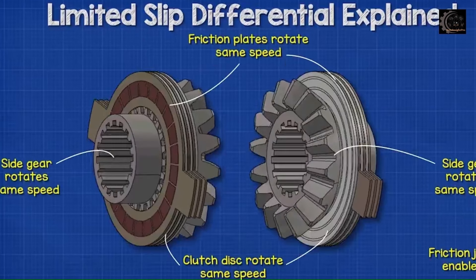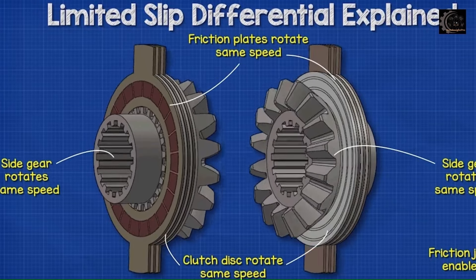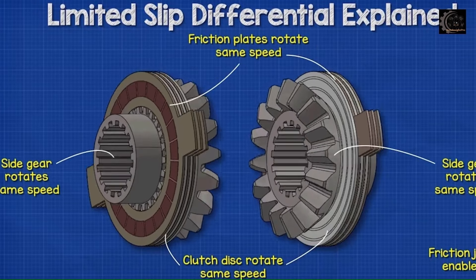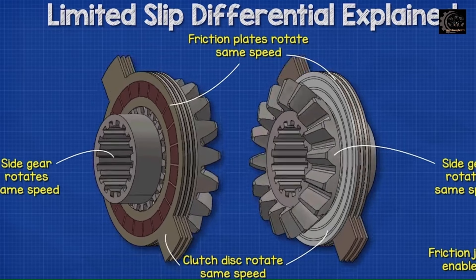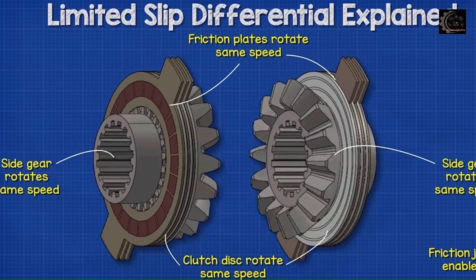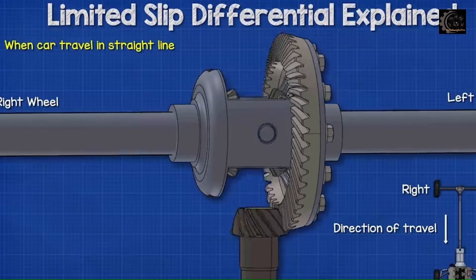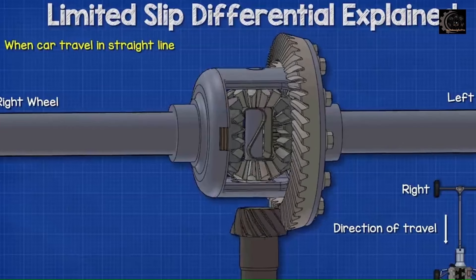However, when the car travels in a straight line, the friction between the clutch packs temporarily locks the side gears so that they rotate at the same speed. The main casing will rotate with them and provides the pushing force.